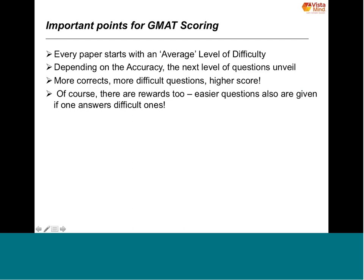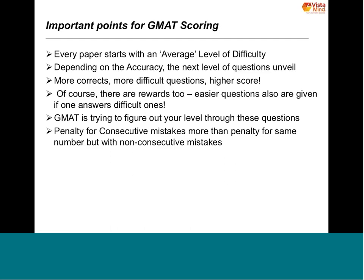An important point: the penalty for consecutive mistakes is more than the penalty for the same number of non-consecutive mistakes. For example, if you have 37 questions and get 10 wrong consecutively, you will get a higher penalty than if those same 10 mistakes are spread across all 37 questions. In the latter case, chances are you will get a much better score.